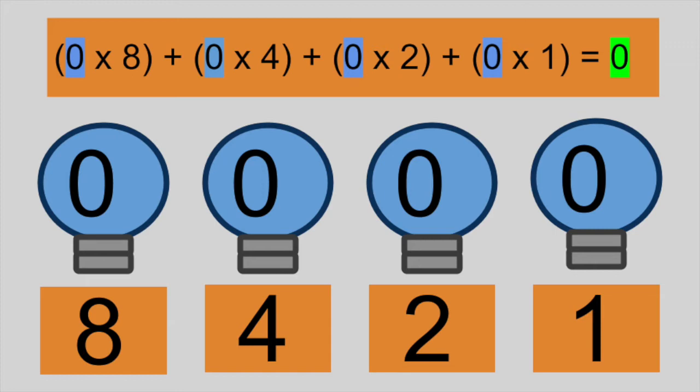So if all of the light bulbs are turned off, we get 0 times 8 plus 0 times 4 plus 0 times 2 plus 0 times 1.